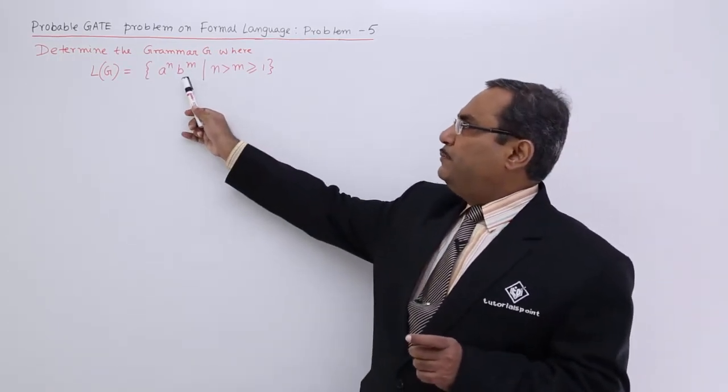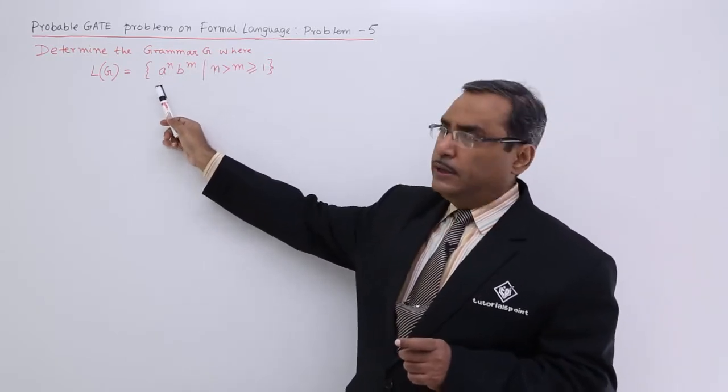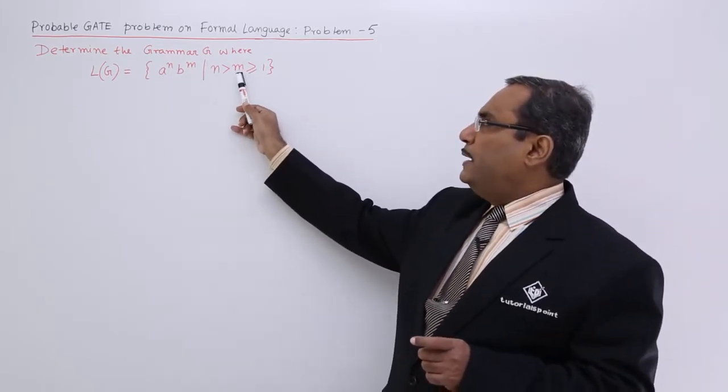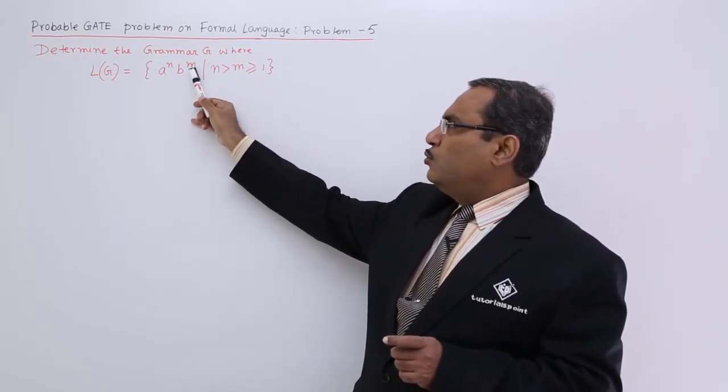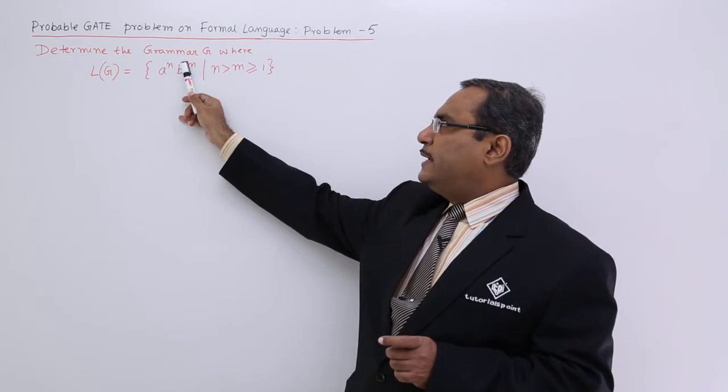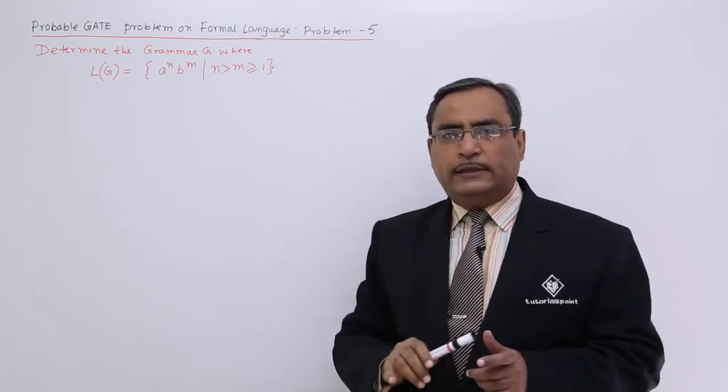And what is the minimum string possible here? Here you see the value of m can be equal to 1, so that is the minimum. If m is equal to 1, then n is greater than m, that means n should be at least 2.